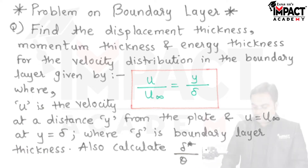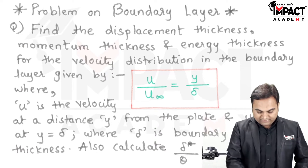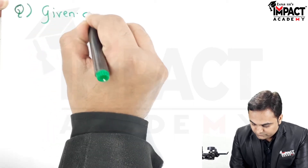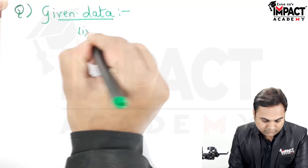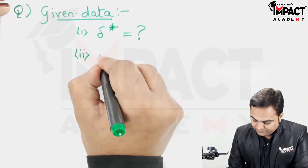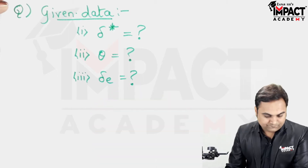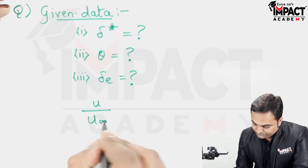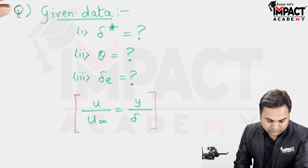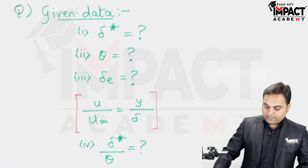We also need to calculate the ratio of δ* upon θ, where δ* is the displacement thickness and θ is the momentum thickness. So to summarize: find displacement thickness (δ*), momentum thickness (θ), energy thickness, and the ratio of displacement thickness to momentum thickness. The given velocity distribution is u/u∞ = y/δ.